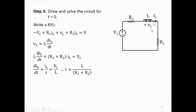Step 3: draw and solve the circuit for T greater than 0. There is one loop, so we write a mesh equation: −V1 + R1·IL + VL + R2·IL = 0. We have two unknowns — IL and VL — but we know the current-voltage relationship of the inductor. Substituting, we get one differential equation in IL: dIL/dt + IL/τ = V1/L, where τ = L/(R1 + R2).